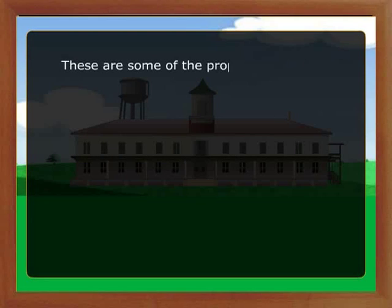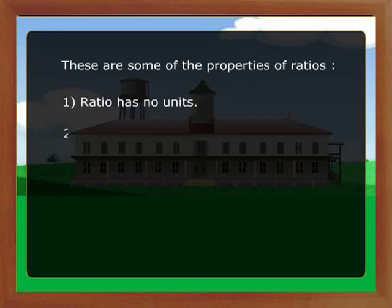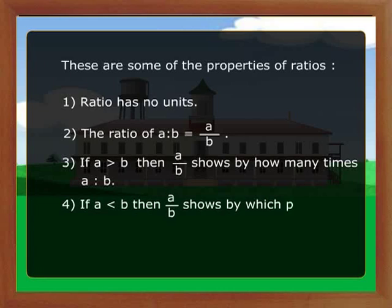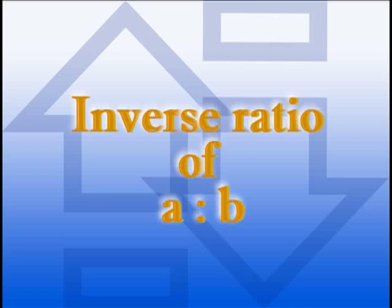These are some of the properties of ratios. First, ratio has no units. Second, the ratio of A is to B is equal to A by B. Third, if A is greater than B, then A by B shows by how many times A is to B. Fourth, if A is less than B, then A by B shows which part A is of B. If A is to B is a ratio, then B is to A is the inverse ratio.